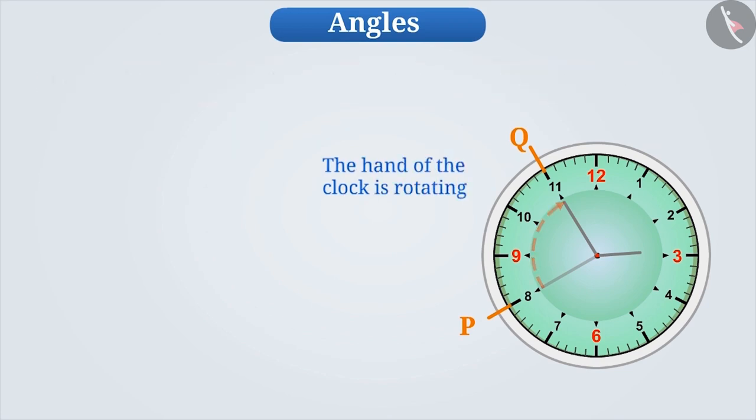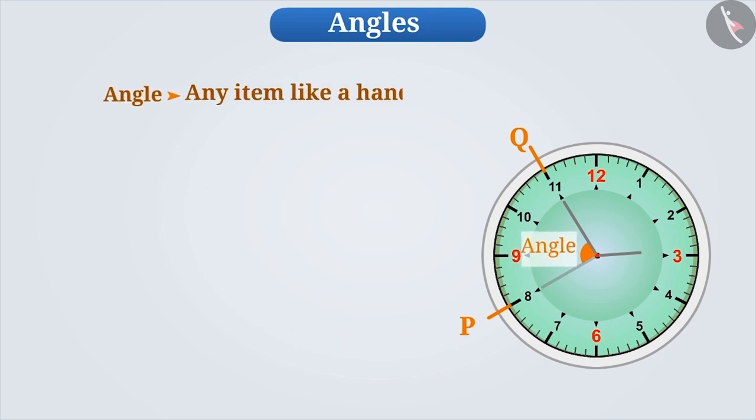Angle helps us to show the change in position. Angle tells us how much an object, like the hand of a clock, has rotated. We denote this rotation by measuring the angle.